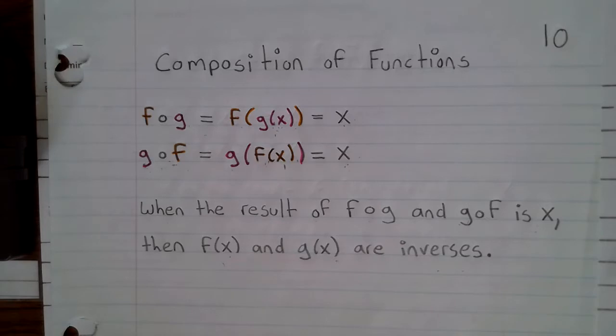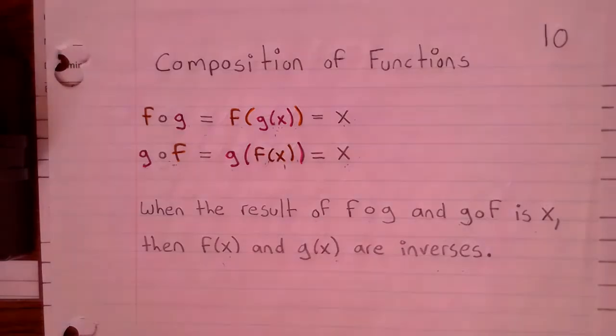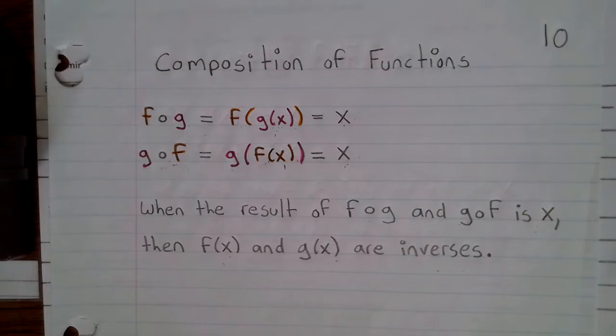f of g equals f of x equal to x, and g of f equal to f of x equals x. When the result of f of g and g of f is x, then f of x and g of x are inverses.